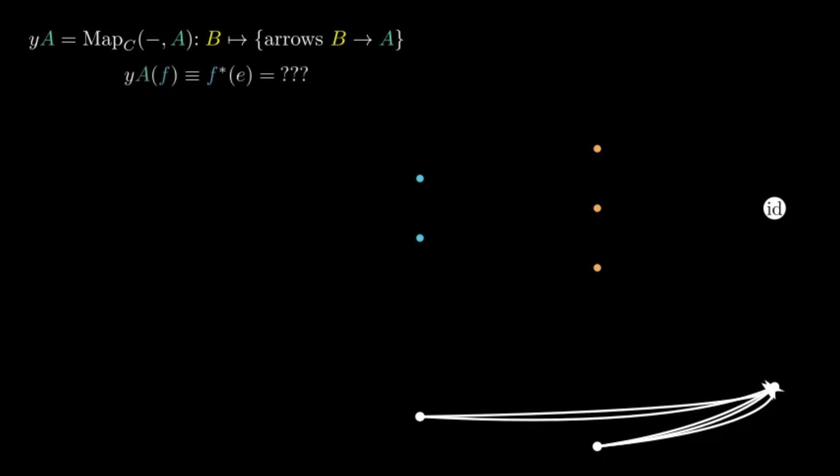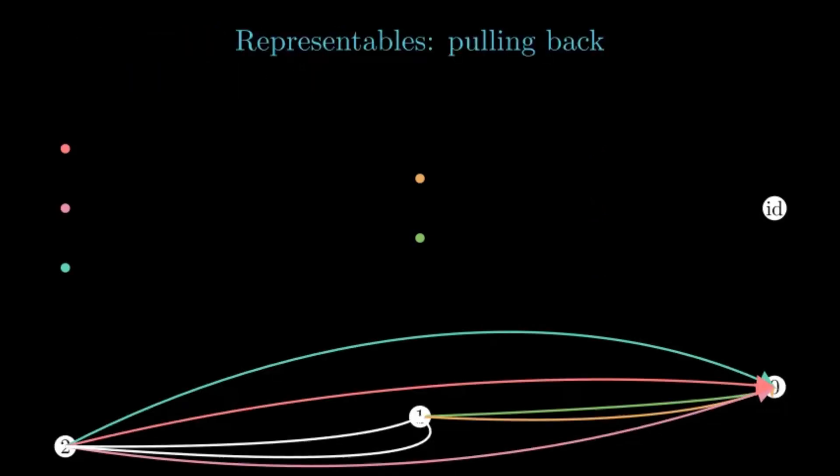How are elements of these sets pulled back along arrows? They do it by pre-composing. Say, we have an element corresponding to the map g, and we want to pull it along f. Well, there is only one way to get a map from 2 to 0 from these data, which is to take the composite. And this is where we will send g.